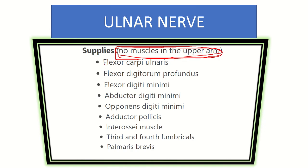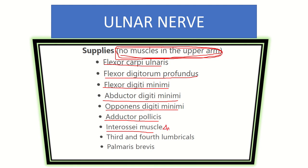The muscles supplied by the ulnar nerve are: flexor carpi ulnaris, flexor digitorum profundus, flexor digiti minimi, abductor digiti minimi, opponens pollicis, adductor pollicis, all interossei muscles — four dorsal and three palmar — the third and fourth lumbricals (the medial two lumbricals), and palmaris brevis. The hypothenar group — flexor digiti minimi, abductor digiti minimi, and opponens digiti minimi — are all part of ulnar nerve supply.